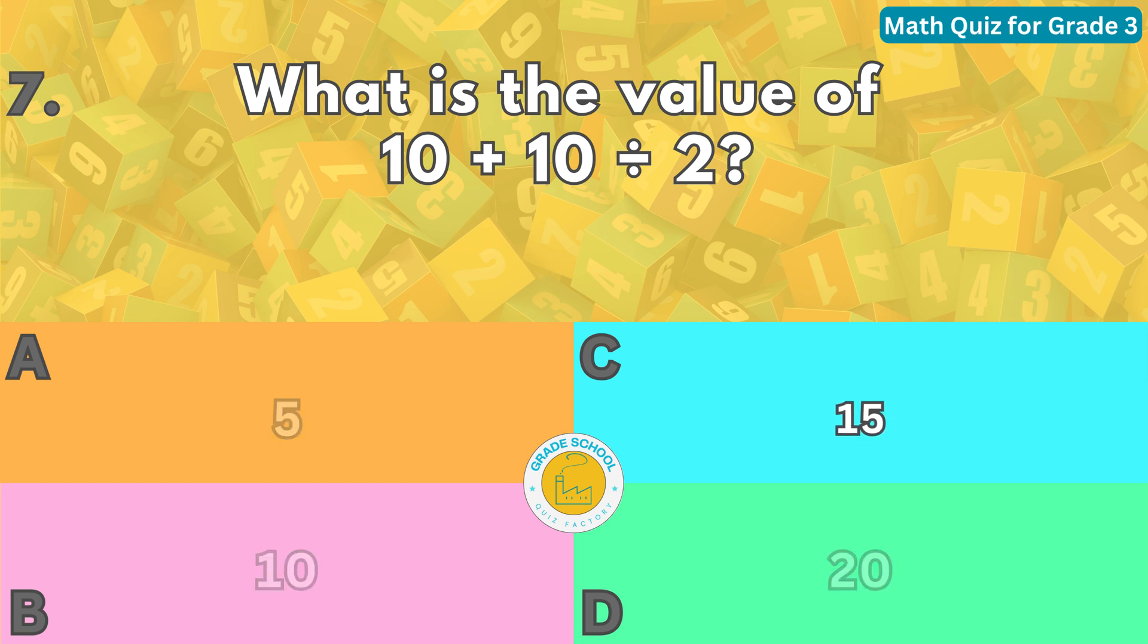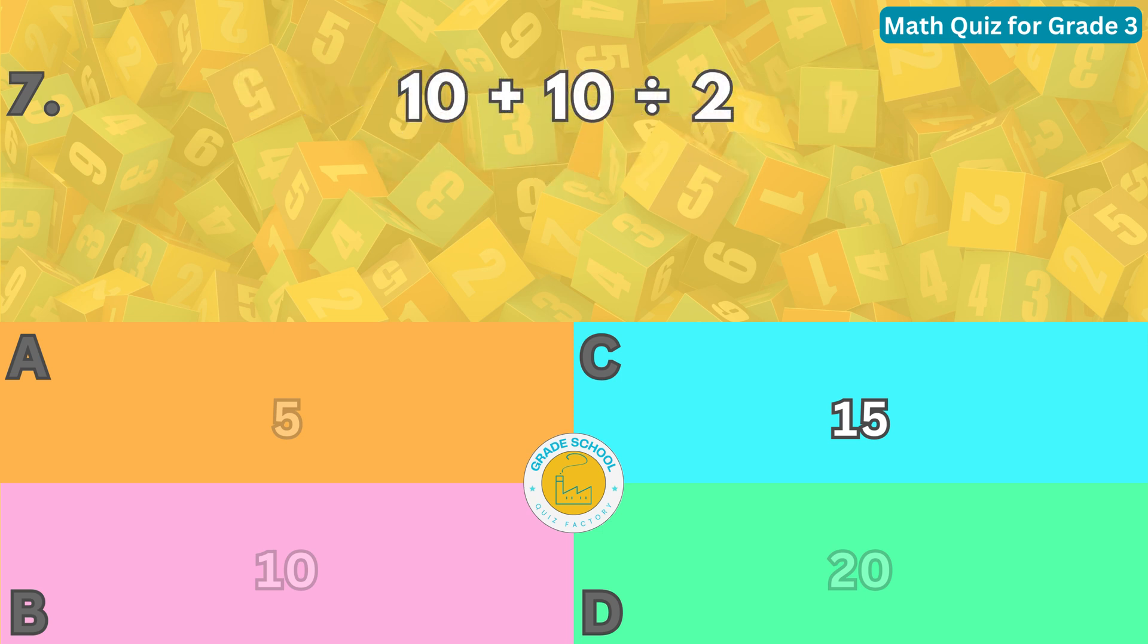To find the value of the expression, we follow the order of operations, which is parentheses, exponents, multiplication and division, and addition and subtraction. There are no parentheses or exponents in the expression, so we start with multiplication and division. We do 10 divided by 2 and get 5. Then we do 10 plus 5 and get 15.